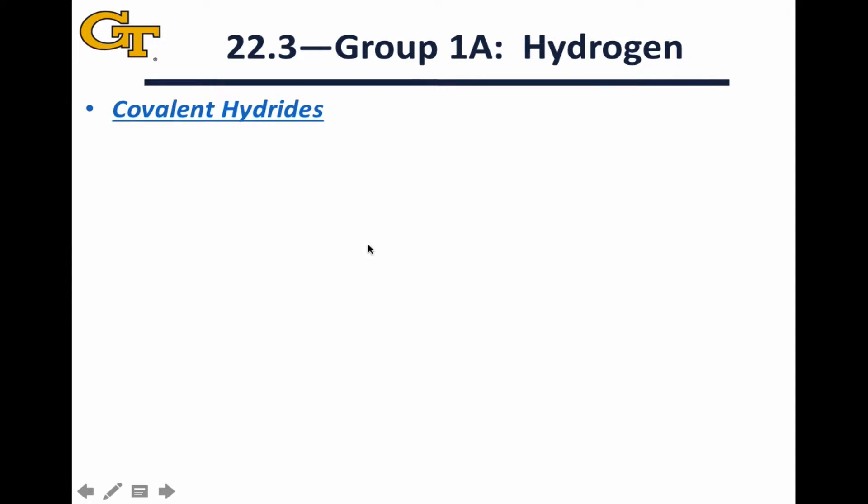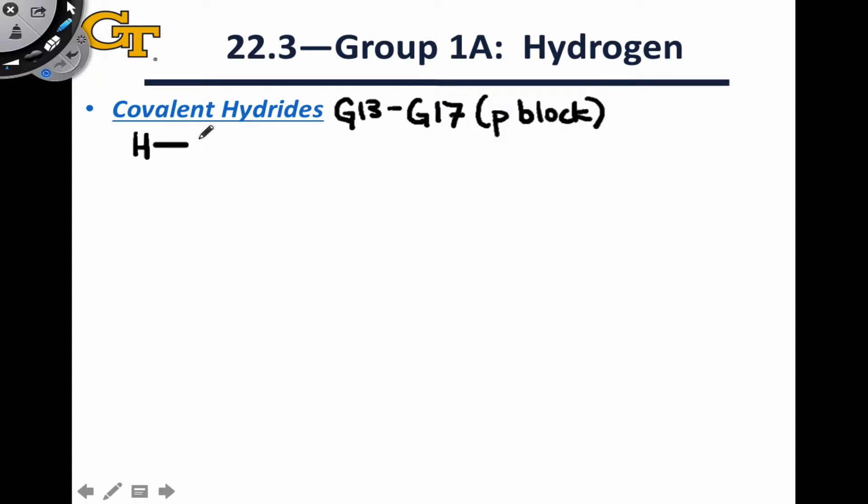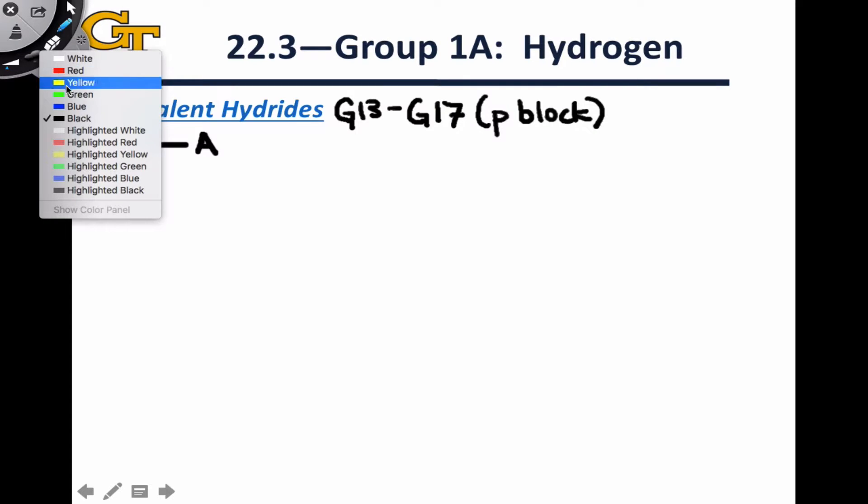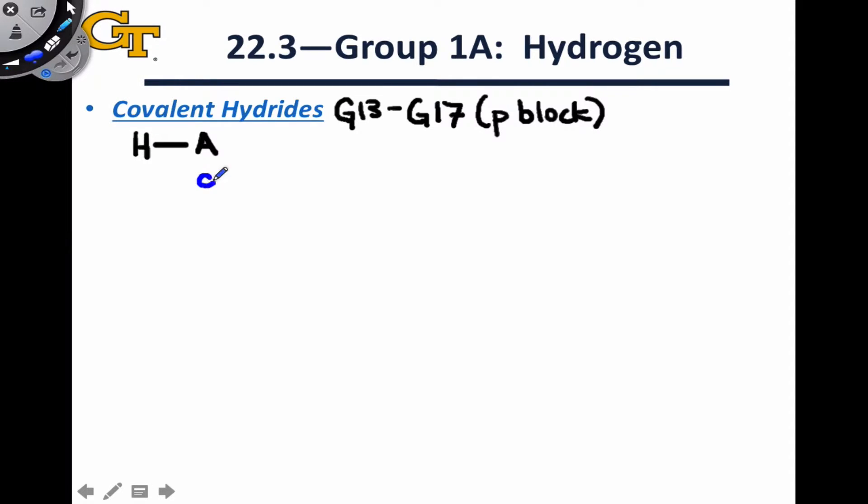Within the main group, the largest class of hydrides are the covalent hydrides, and these are found for most group 13 to group 17 elements in the P block of the periodic table. As the name suggests, these hydrides are characterized by one or more covalent bonds between hydrogen and generally an electronegative non-metallic element. The key point is that this is a covalent bond, and since we're talking about the P block on the right-hand side of the periodic table, the typical situation is that the non-metal is more electronegative than the hydrogen atom, leaving the hydrogen atom with a partial positive charge.